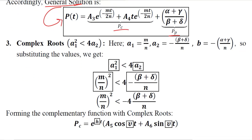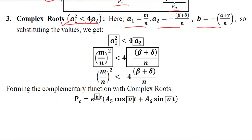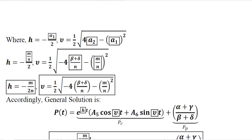Now the complex roots case is to be developed, and the complementary function under complex roots will be furnished. The discriminant is negative — the first term is less than the second term. These are a1, a2, and b. Putting these values of a1 and a2, we get this inequality. The complex roots are present in this case, and we can put the values of h and v (epsilon in Greek). So h equals minus a1 over 2, and epsilon or v is equal to this expression.